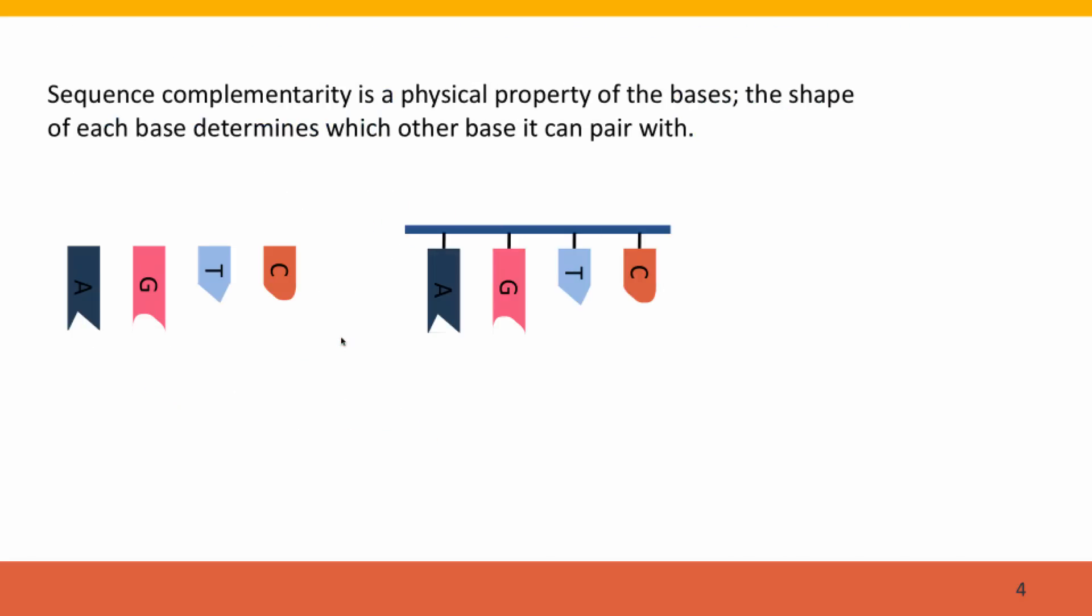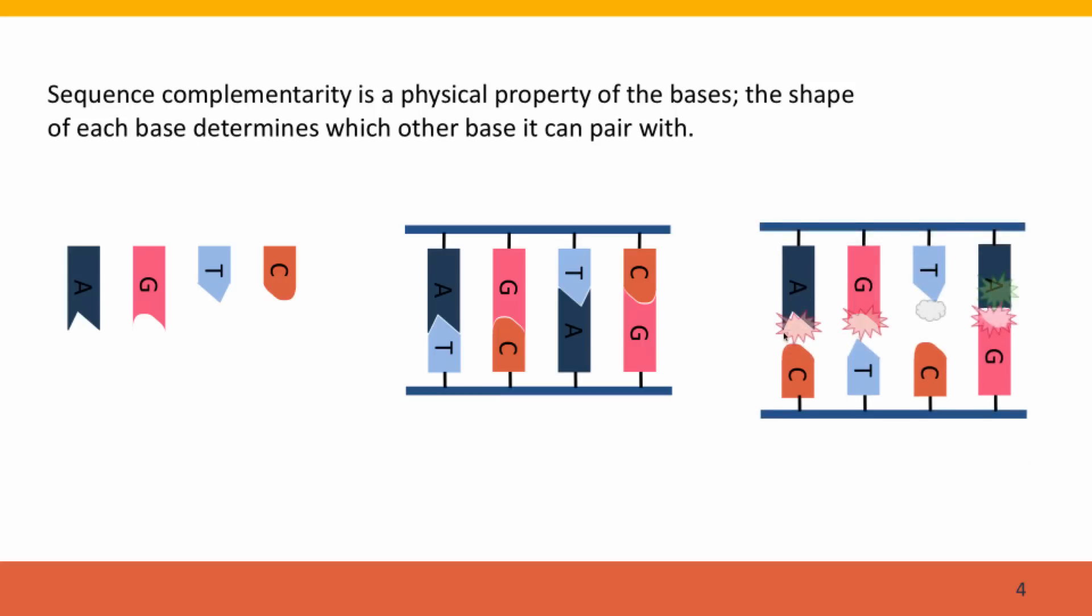The meaning of that is shown here. This is just a schematic representation of the four bases as four different shapes attached to a line that represents the DNA strand. The important feature is that they are pairwise complementary. The shape of the A base fits with T, and G fits with C. But they don't fit in other combinations.